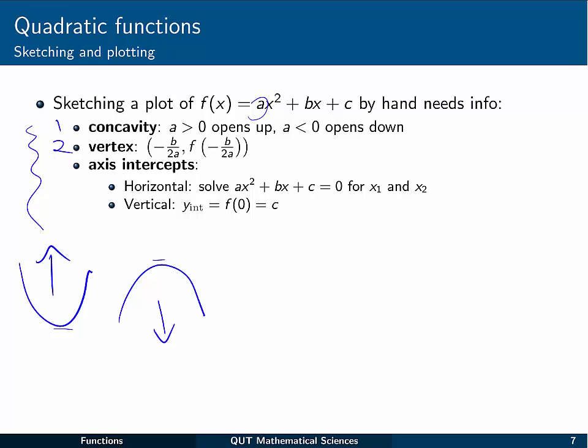The second piece is, where does the vertex occur? So where is this point? We can figure that out by finding x equal to minus b on 2a, and then the corresponding function value, f of minus b on 2a. Finally, the third piece of information is the axis intercepts. And we already know how to do this. We just solve the corresponding quadratic equation to figure out the 0, 1 or 2 possible values.